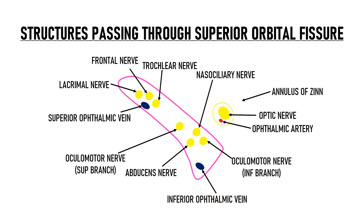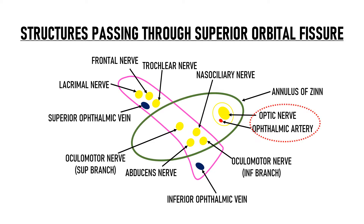If we draw a diagram of this area, we can see that the annulus of Zinn divides the superior orbital fissure into 3 parts. The optic canal containing the optic nerve and ophthalmic artery also lies within the boundaries of the annulus of Zinn. We will discuss the other contents of the superior orbital fissure when we cover the nerve supply of the extraocular muscles.